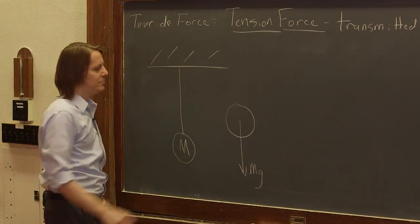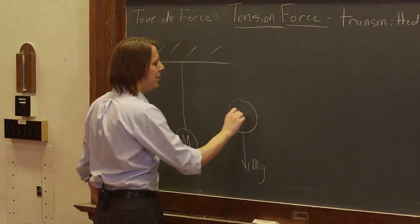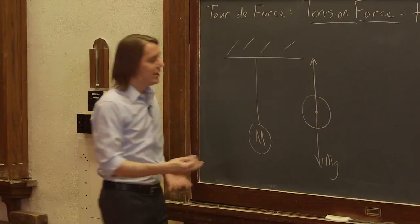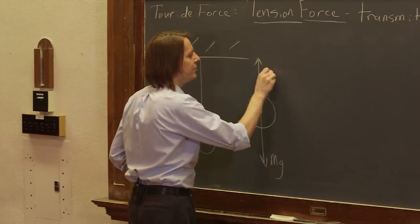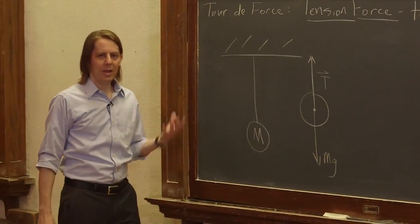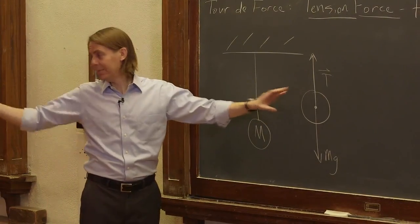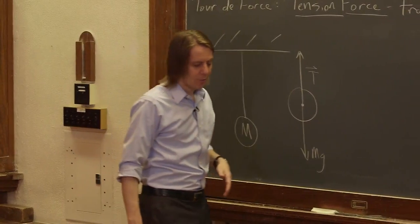Force of gravity, mg is pulling it down. And what's pulling it up, well, what's holding it up clearly is the cable. And the cable is doing it by applying a tension force. There is tension in the cable, and the sum of the tension and the weight in this case is zero. And that's why it's not moving in the y direction.